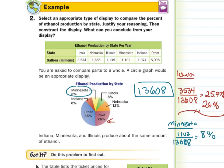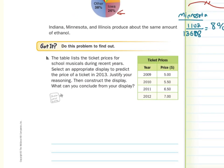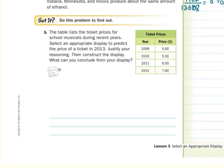So as we look at our final got it question of the year. The table lists the ticket prices for school musicals during recent years. Select an appropriate display to predict the price of a ticket in 2013. Justify your reasoning, then construct the display. What can you conclude from your display? Well, we're looking to show change over a period of time. Ticket prices changing over a period of time.